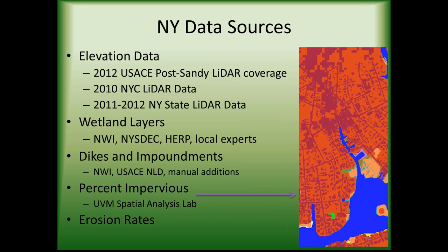For New York, the data sets were similar — post-Sandy LIDAR coverage for most of the coast. A major difference was that we had more of a mosaic of wetland layers, particularly in the New York City area, and we worked closely with local experts to create a good wetland data layer for the initial condition. For the impervious layer, we worked with the University of Vermont Spatial Analysis Lab, who created a very detailed layer where you can almost see individual houses and driveways. We also had site-specific erosion rates, though not quite as detailed as those for Connecticut.